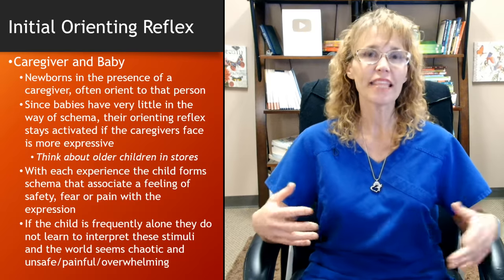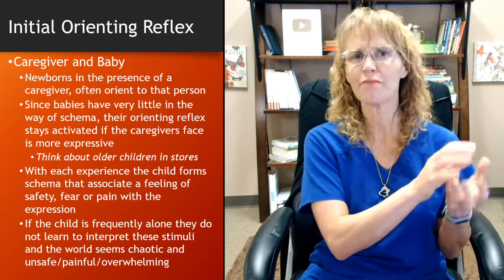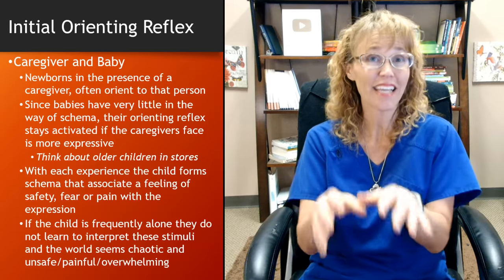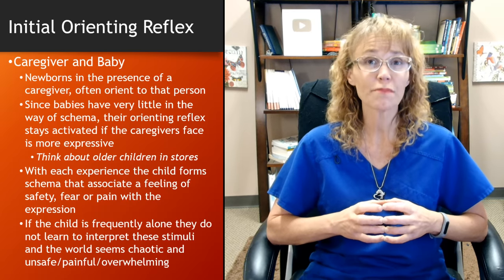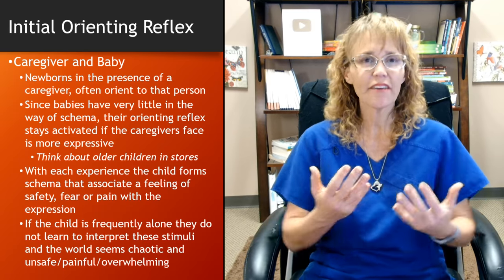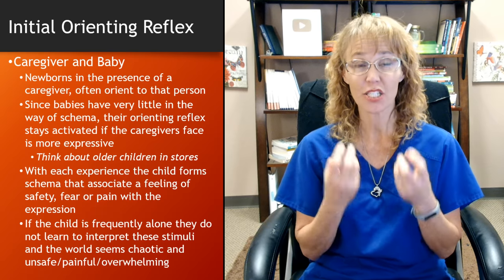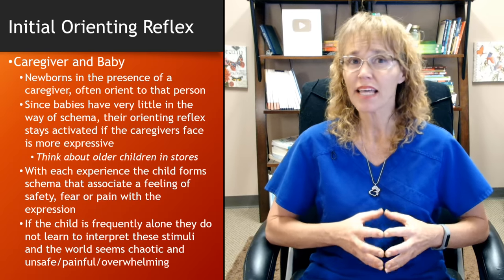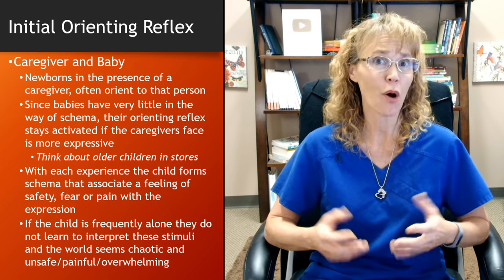As they get older and they've seen multiple people make whatever funny face, that starts to become generalized — they expect: when I see a person making this face, this is what's going to happen. But until they've experienced it multiple times, it's still a little curious. With each experience the child forms schema — shortcuts that associate a feeling of safety, fear, or pain with the expression. Even infants, if they associate a particular expression on their parent's face with being unsafe or handled roughly, will actually avert their gaze because it's too overwhelming.